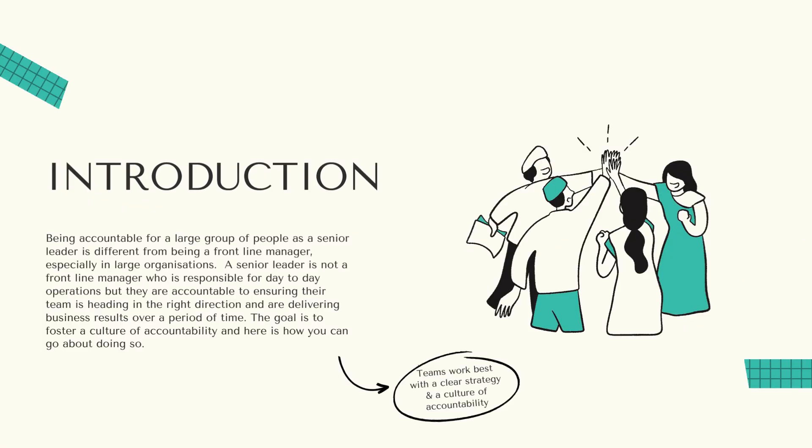Being accountable for a large group of people as a senior leader is different from being a frontline manager, especially in large organisations. A senior leader is not a frontline manager who is responsible for day-to-day operations of the team, but they are accountable for ensuring that their teams are heading in the right direction and are delivering business results over a period of time. The goal is to foster a culture of accountability, and here is how you can go about doing so.